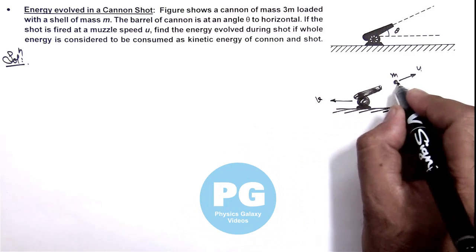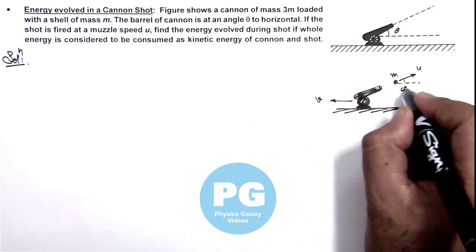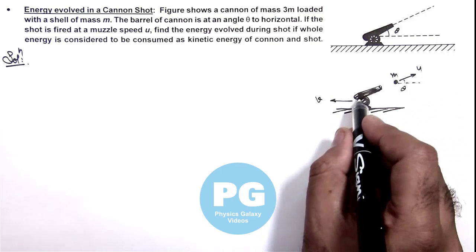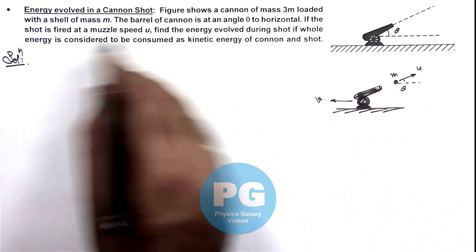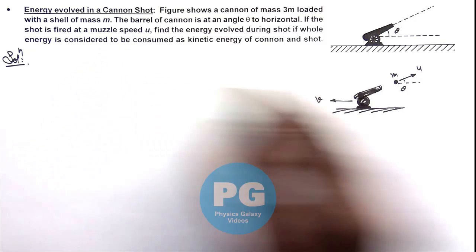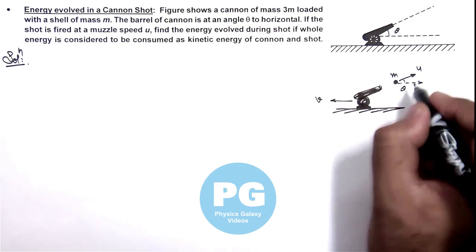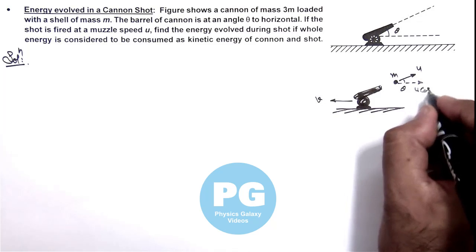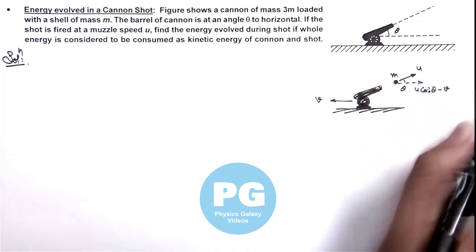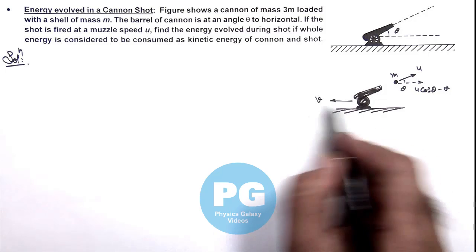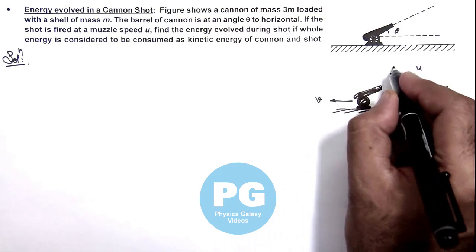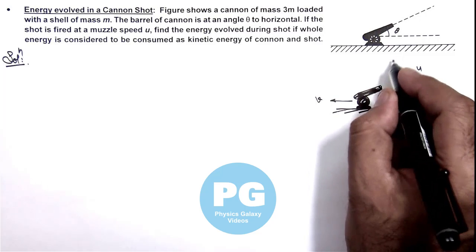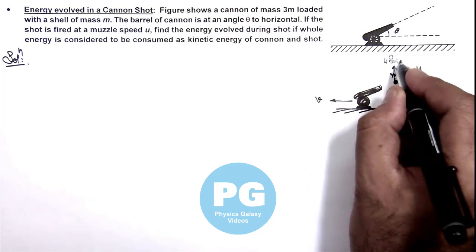We can say this u would be with respect to the barrel as we are given that the shot is fired at a muzzle speed u. In this situation, the horizontal velocity of ball we can write as u cos theta minus v, because it will also be having the opposite velocity v. And in upward component, the ball velocity can be written as u sine theta.